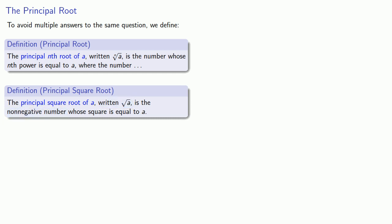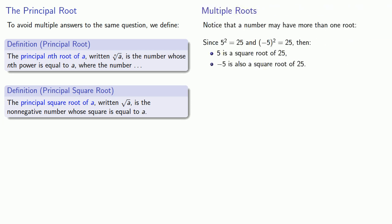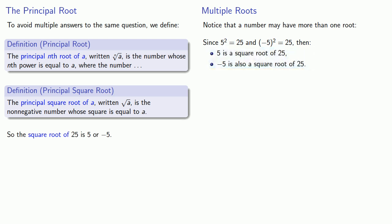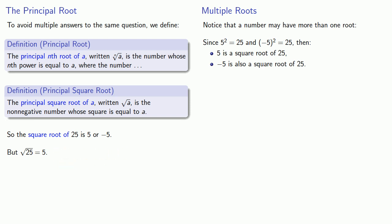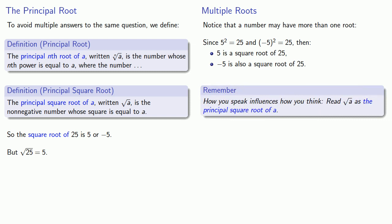Earlier we said the square root of 25 is 5 or negative 5. But when we write the principal square root symbol, that is equal to 5 only. A useful idea to keep in mind: how you speak influences how you think. So when you see this symbol, it's important to read it as the principal square root of a.